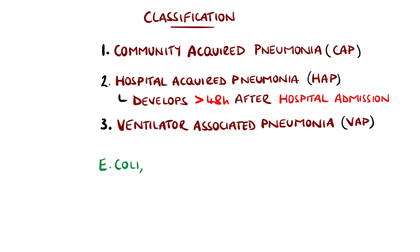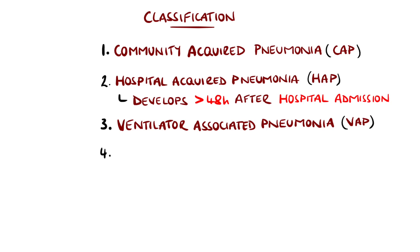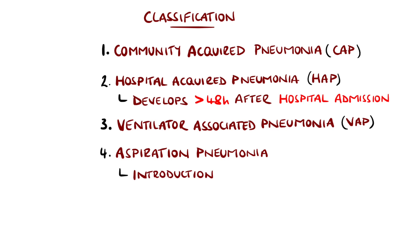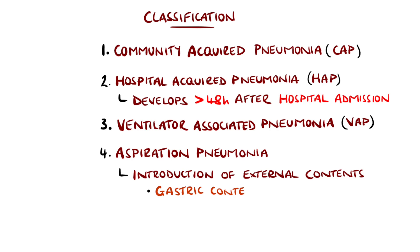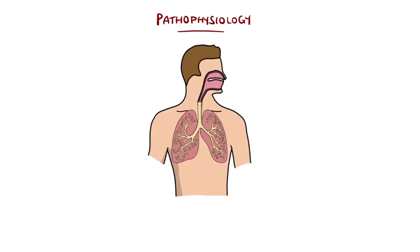Similar agents cause HAP and VAP, including E. coli, Pseudomonas, and Staphylococcus aureus. Aspiration pneumonia occurs when external contents are introduced to the lung environment, such as gastric contents after vomiting or via a gastric feeding tube. The microbes involved here are similar to those in CAP and HAP.